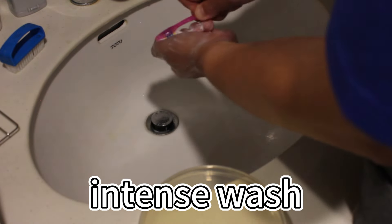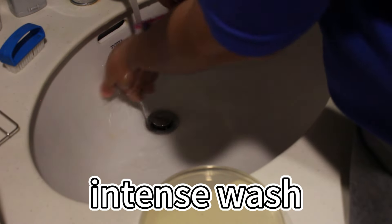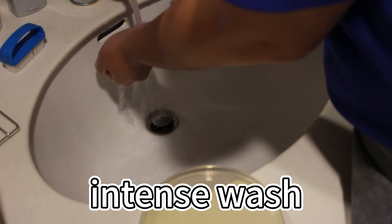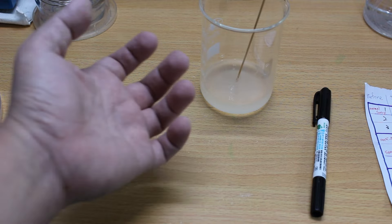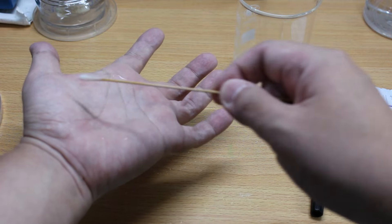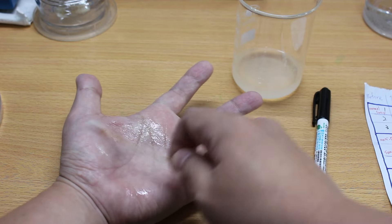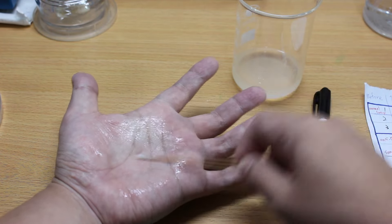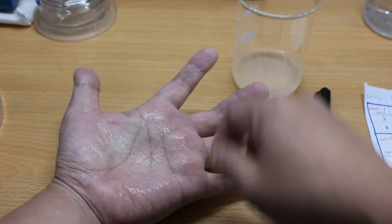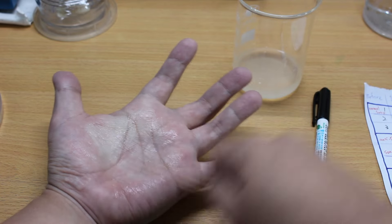So after I put bacteria on my hand, I will first use water to rinse my hand, make sure the bacteria will not just get washed off by simply water coming through. And then I will use different wash methods combined with normal and antibacterial soap to wash my hand. And after that I will stick my hand on the agar plate to see if I actually get my hand clean. And also there will be one group which I will only wash with water without any soap.